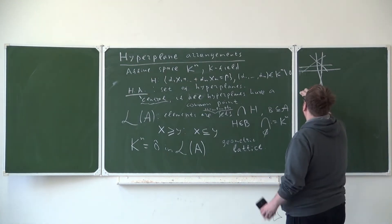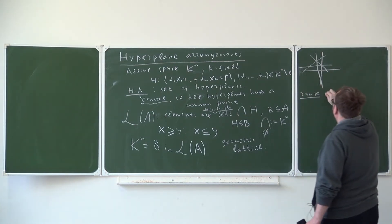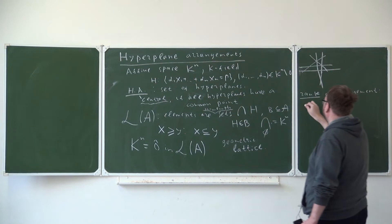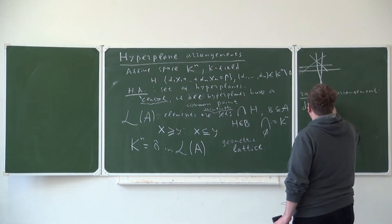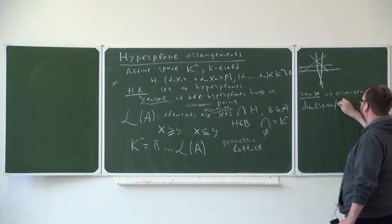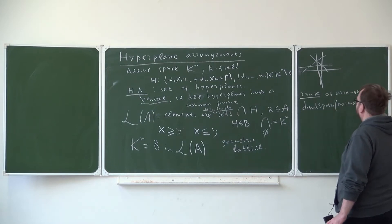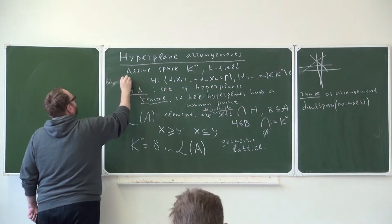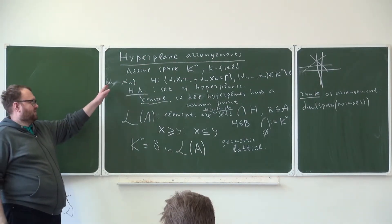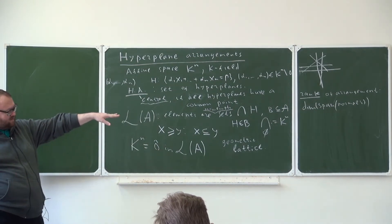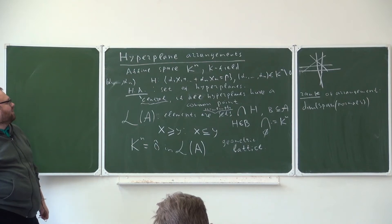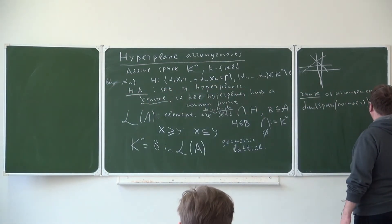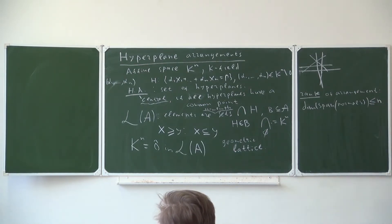Let us define the rank of the arrangement. The rank is the dimension of the linear span of normals to the hyperplanes. The normals are the vectors (alpha_1, ..., alpha_n). The rank is defined up to scalar, but when counting dimension of span that doesn't matter. It is at most n, and when it equals n, we say it is a full rank arrangement.